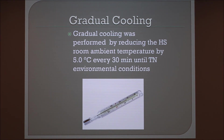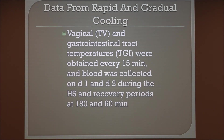For the gradual cooling treatment, this was performed by reducing the ambient temperature in the heat stress room by 5 degrees Celsius every 30 minutes until we reached a thermal neutral condition of about 64 degrees Fahrenheit. Data collected included vaginal and gastrointestinal tract temperatures, with blood collected every 15 minutes during day one and two of the heat stress and recovery periods at 180 and 60 minutes.